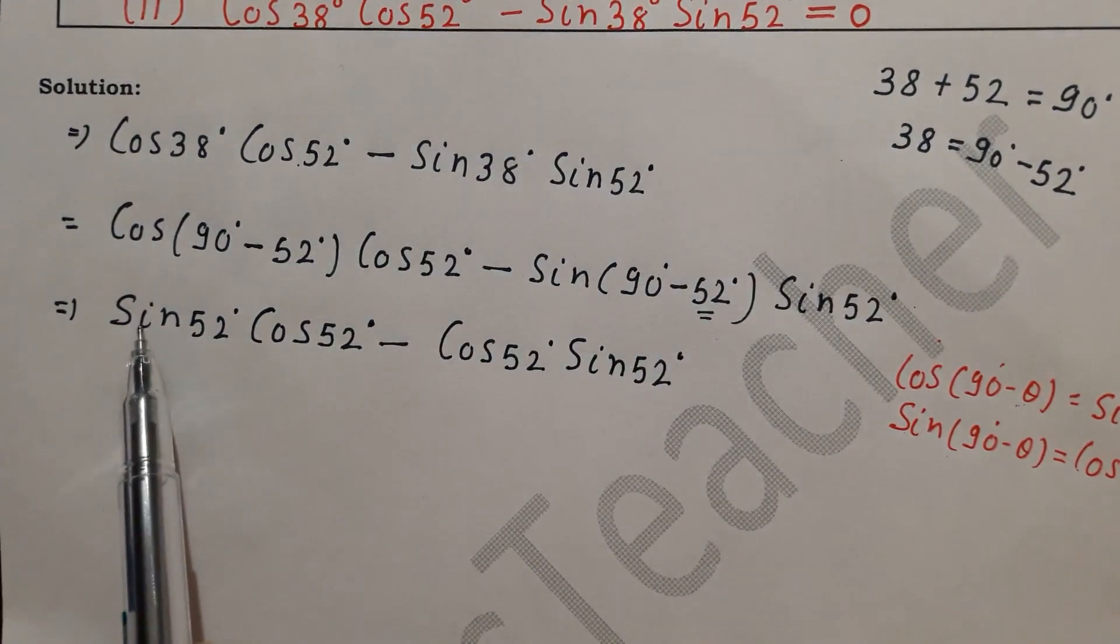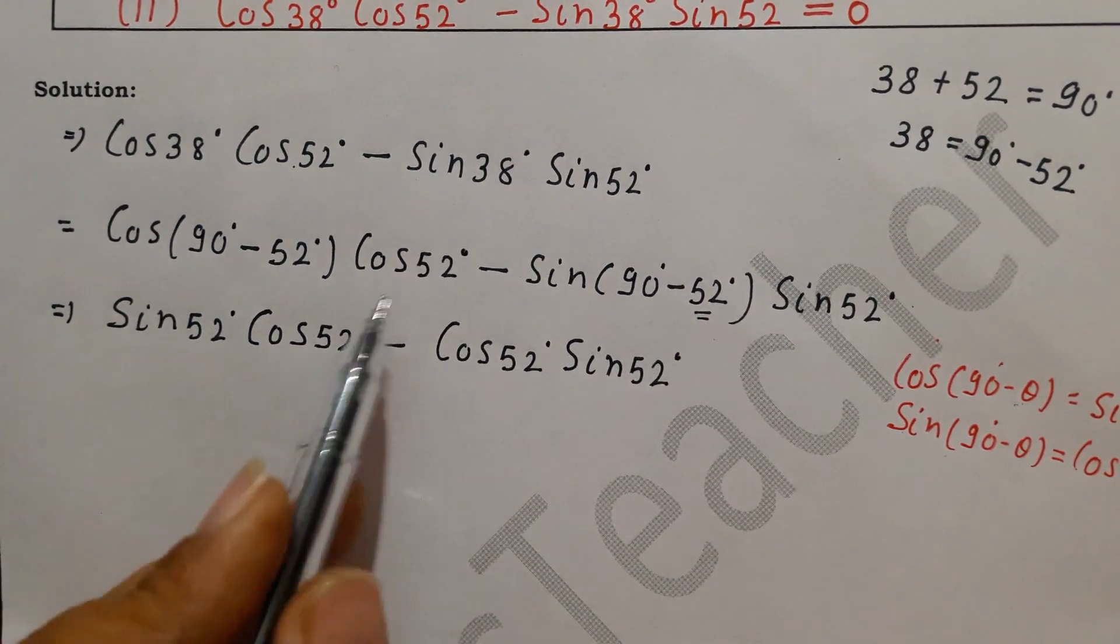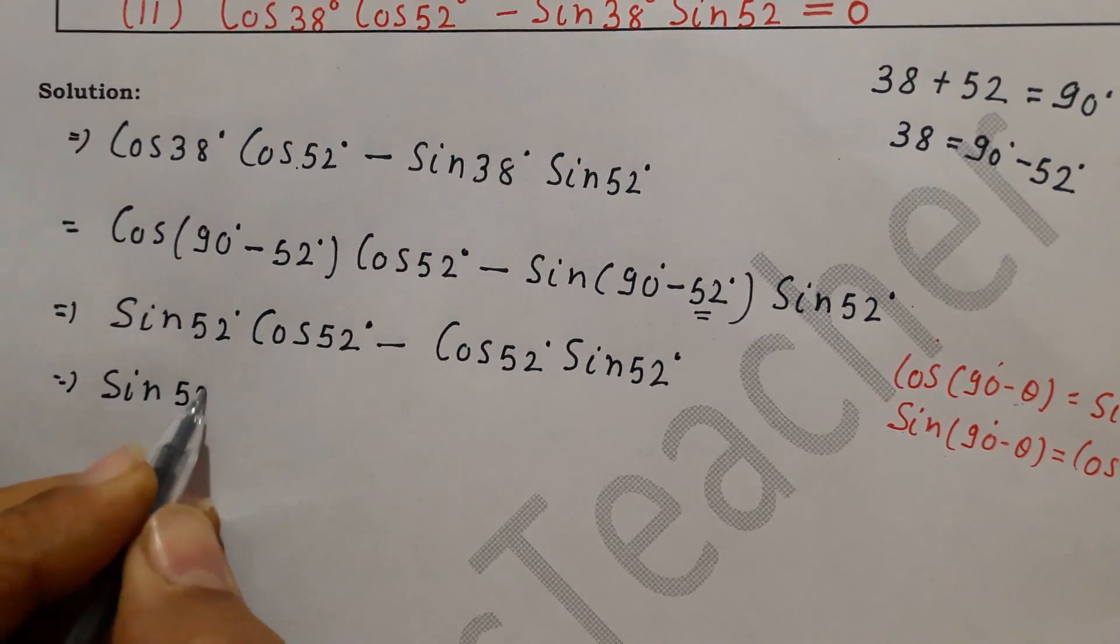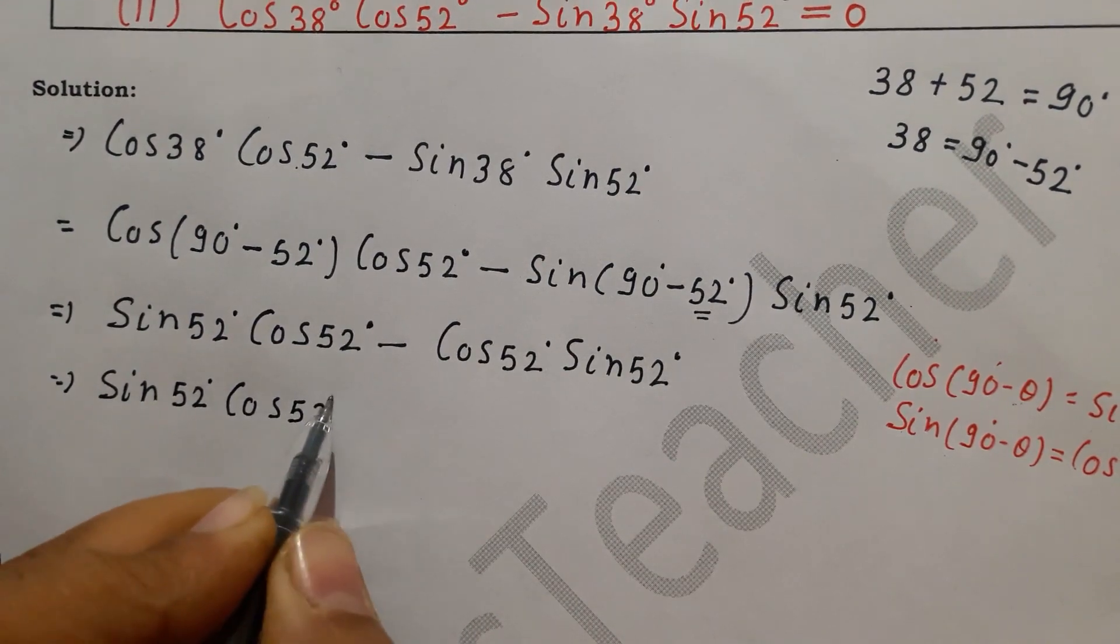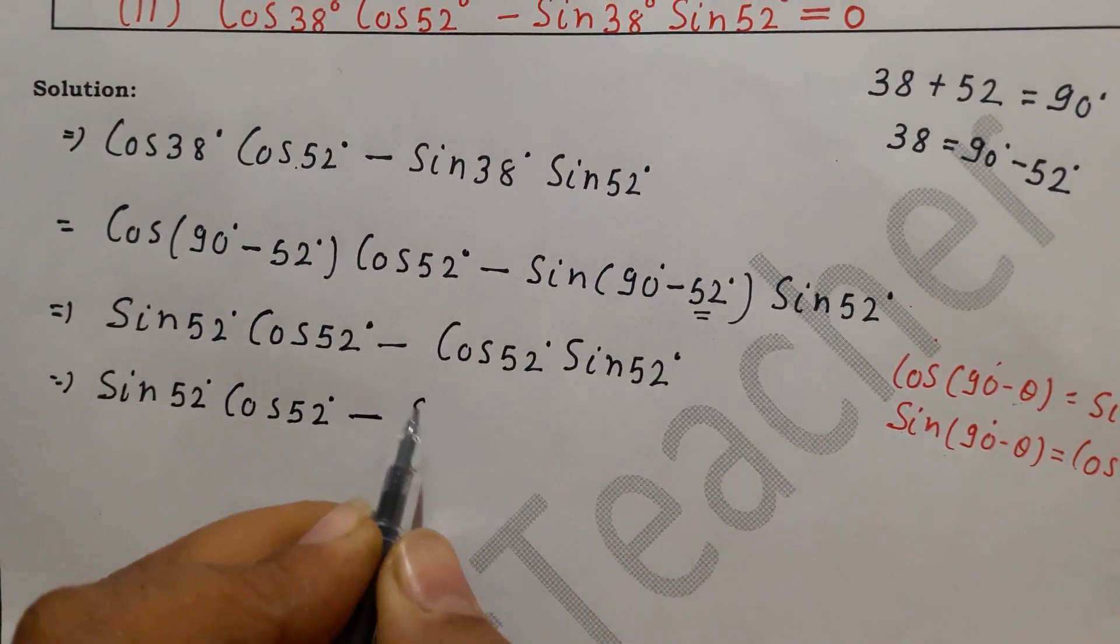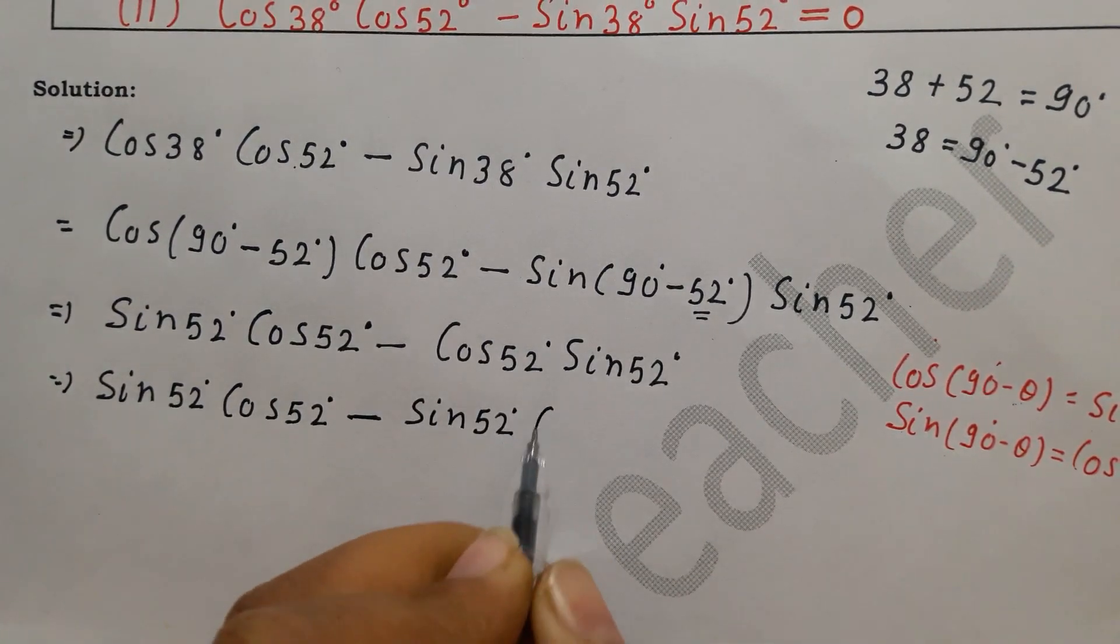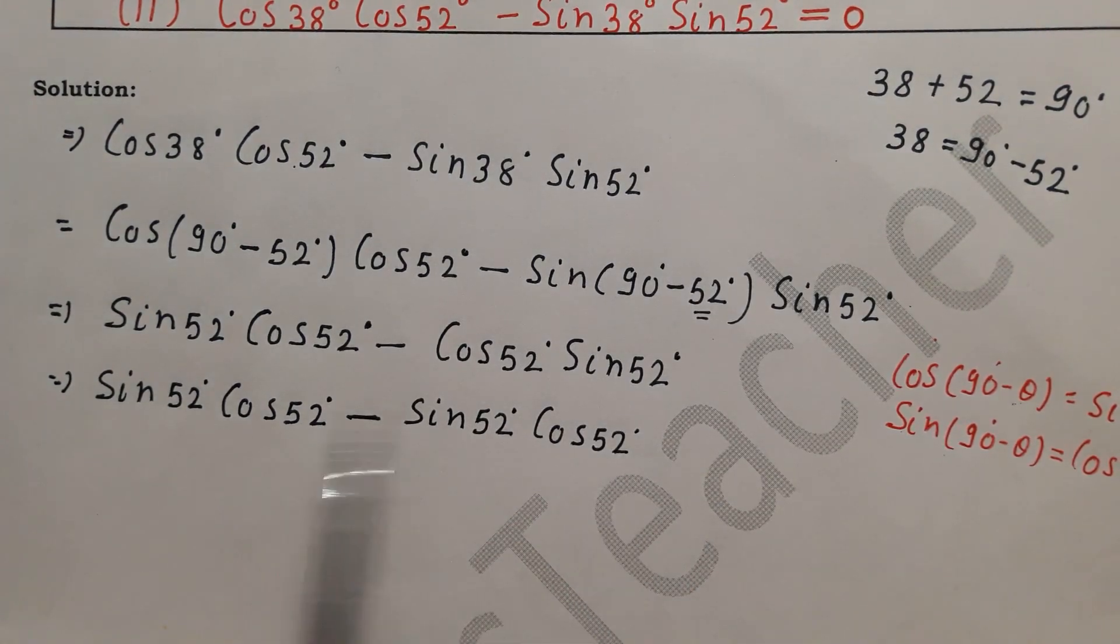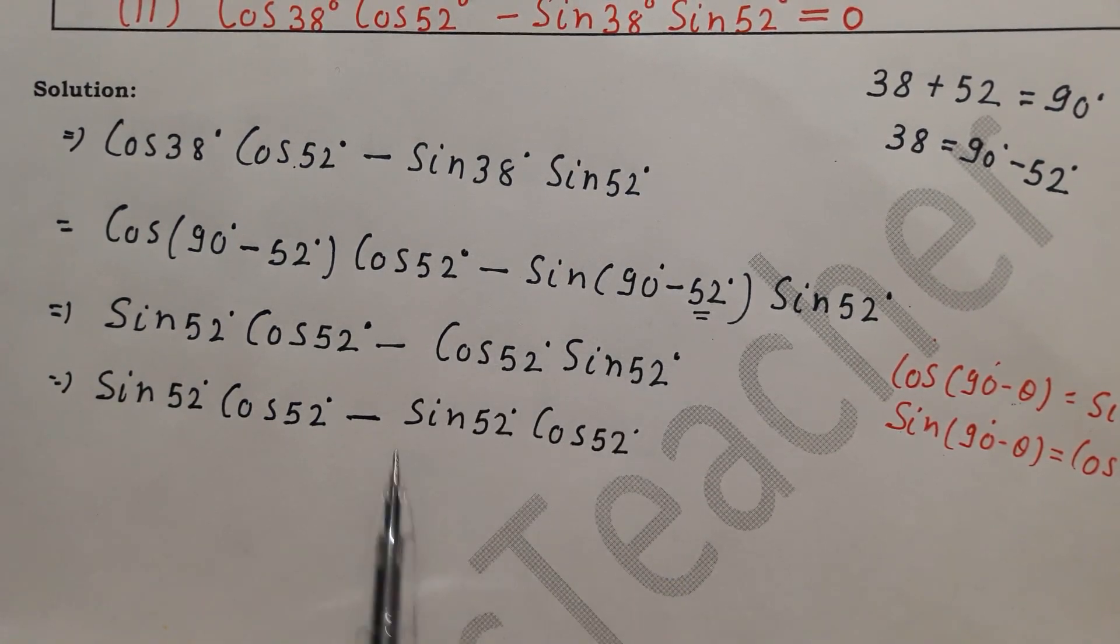Now you can see here this is sin 52 cos 52, and this is cos 52 sin 52. So it has no effect that both terms are the same. Then I will rearrange it because students get confused. In multiplication there is no difference which is first or second. This term is the same because 2 times 3 is 6, or 3 times 2 is also 6.